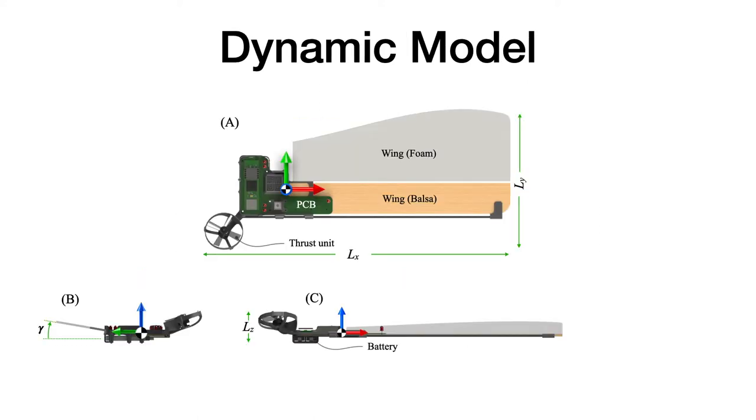We first develop a dynamic model. The platform consists of a seat portion which all the electronics and battery is located. It is a wing that consists of both balsa and foam. And the foam portion is set at a fixed angle to assist with autorotation. A thrust unit consists of a small motor and propeller.